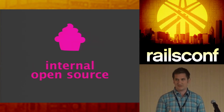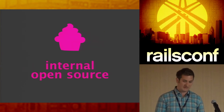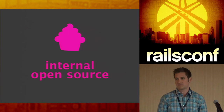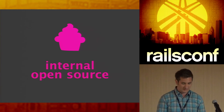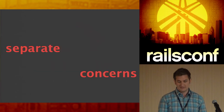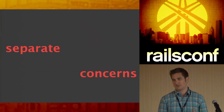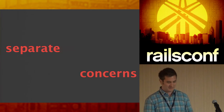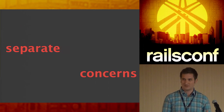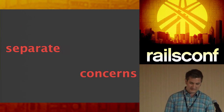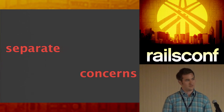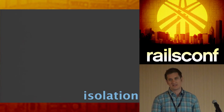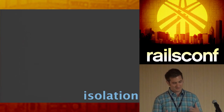Building gems helps build a culture of internal open source: a gem gets its own repo, its own README, it's easy for anyone to contribute, and you get all the benefits of pull requests. It helps with separating concerns — putting stuff in a gem lets you draw boundaries around your code and define your domain better. Isolating code is great for deleting it later: you can track it down, find where it needs to go, and get rid of it.